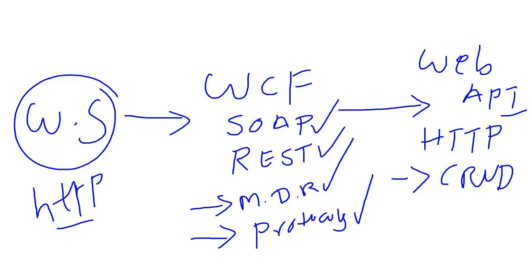Since Web API is built directly for HTTP, you don't need to configure anything — you can just create a project and use it directly. But with WCF, for the same HTTP protocol and simple CRUD operations, you need to configure a lot of things, which is a headache for developers. So if your requirement is HTTP-only, go for Web API. If you need services for duplex communications, SOAP and REST, multiple protocols, or message queues, go for WCF. These days most services are written for HTTP, which is why people opt for Web API — this is the evolution from web services to WCF to Web API.